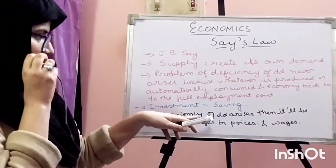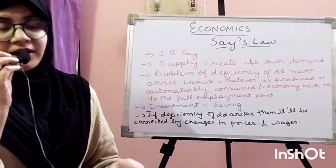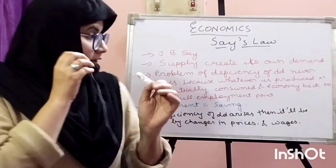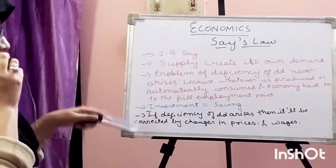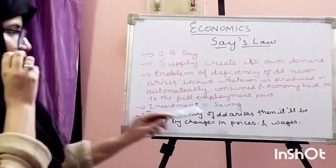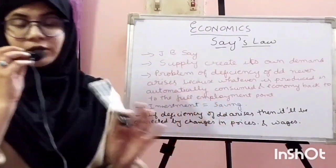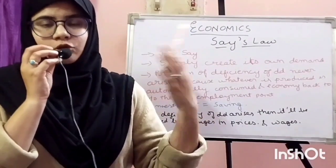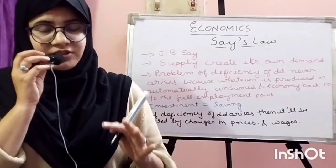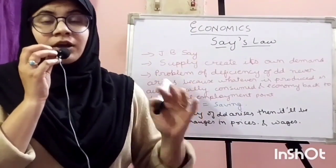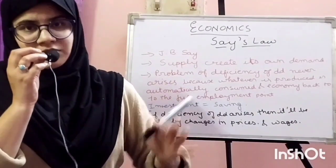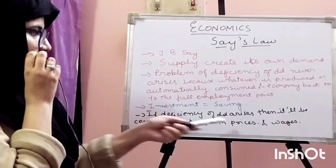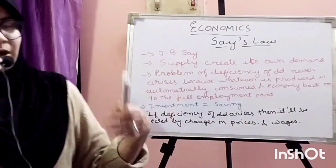If a deficiency of demand arises — if demand is less and clients are fewer — the producer will address it by making changes in prices and wages. In classical theory, wages and prices are more flexible, so they change depending upon the situation. We will read more about these changes in flexibility of price and wages in the next slide.